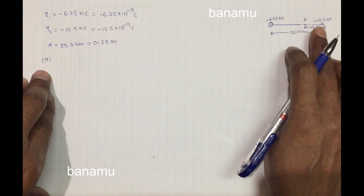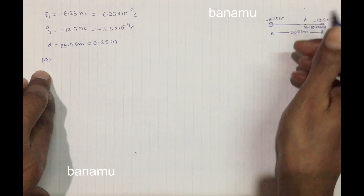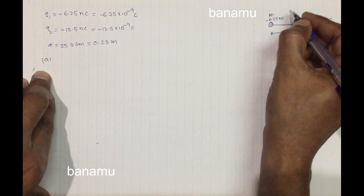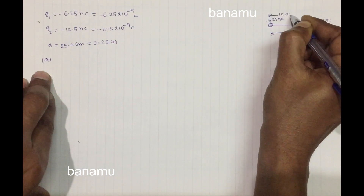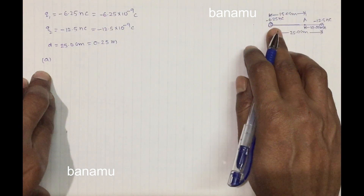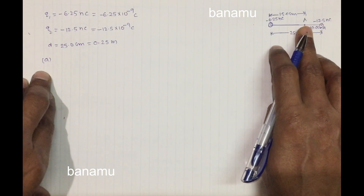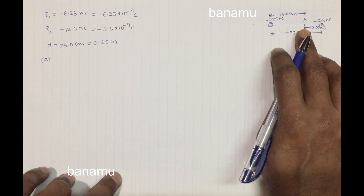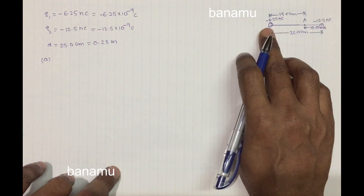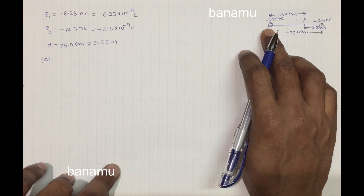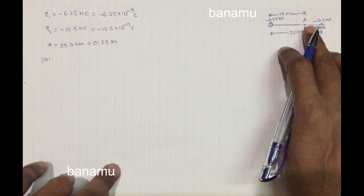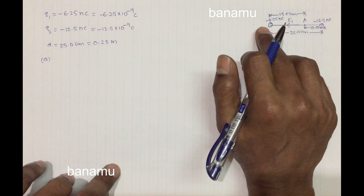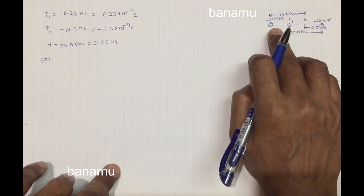The distance between the minus 12.5 nanocoulomb charge to point A is 10 cm. The distance between the minus 6.25 nanocoulomb charge to point A is 15 cm. The direction of the electric field at point A due to the minus 6.25 nanocoulomb charge is towards the negative charge, because the charge is negative.